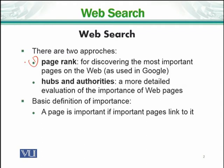The second technique is related to hubs and authorities. Hubs and authorities is a more detailed revelation of the importance of web pages. The PageRank algorithm is also discussed. We can conclude that the hubs and authorities based searching is a more detailed revelation of the importance of web pages which are available on the internet.